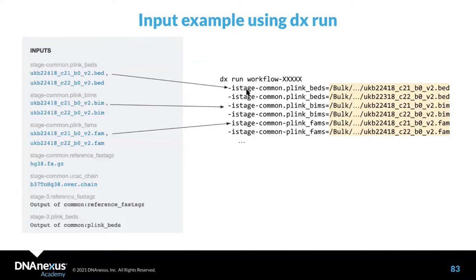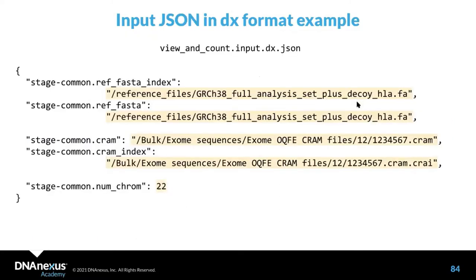We use the dx run utility from the DX toolkit. There is our workflow ID — something you will have once you use the DX compiler. For WDL, you need to compile them, and by compiling you will get your workflow ID. You also have different stages here and you specify the file path. Here's another example of that.